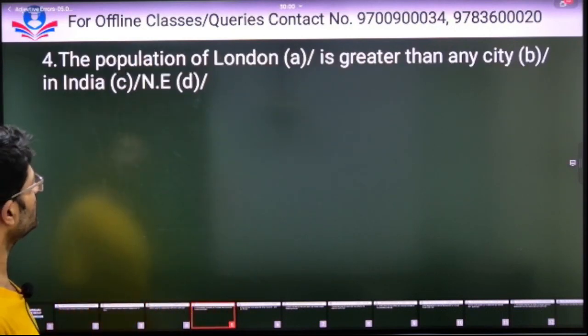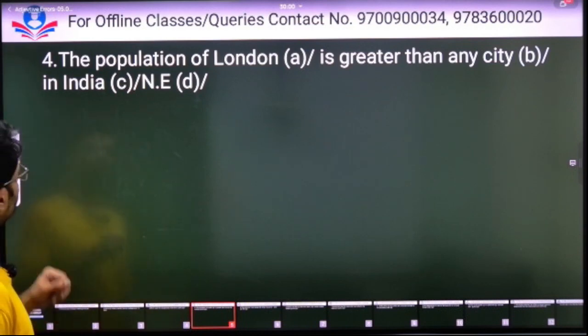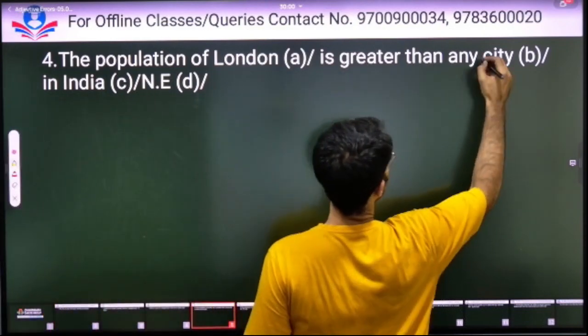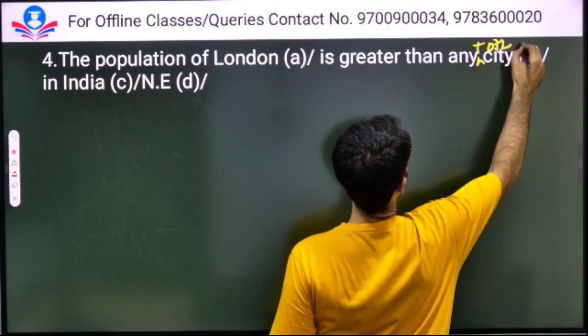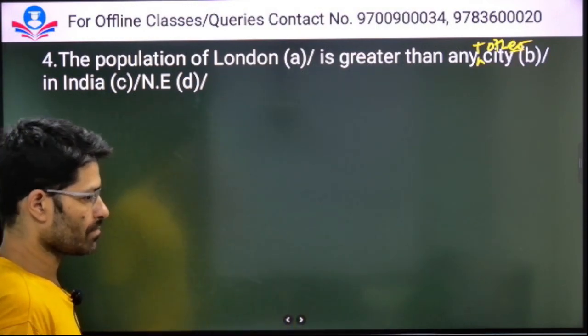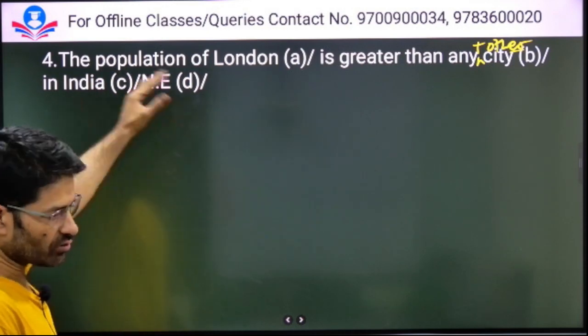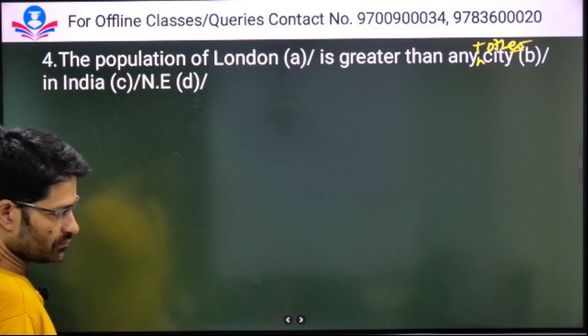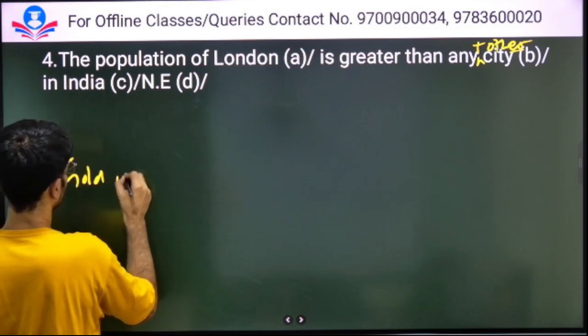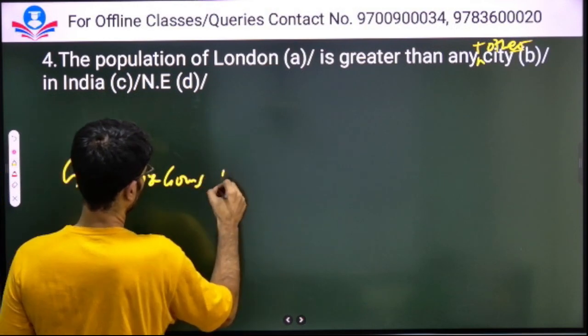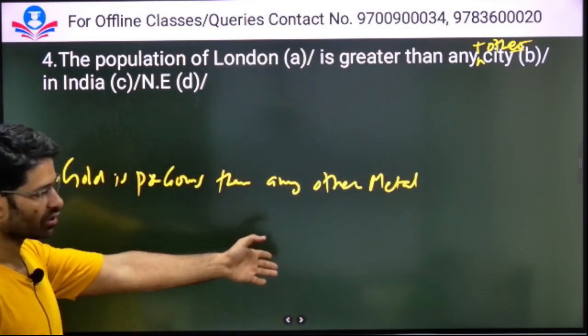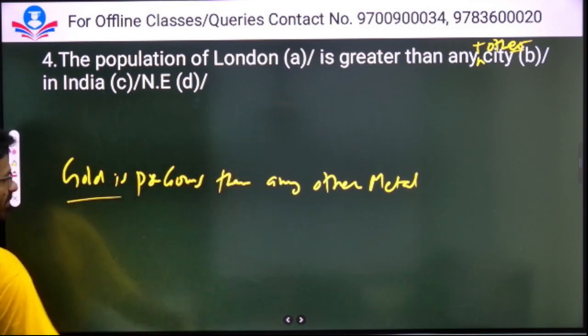The population of London is greater than any city in India. It should be 'any other city'. If we don't put 'other', we also include it in the bottom. We have to keep it apart. Gold is more precious than any other metal. If we don't put 'other', we also include gold, so we have to put it out and say that it is more precious.